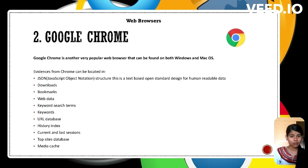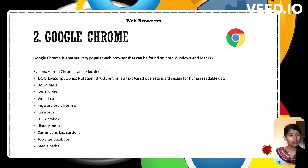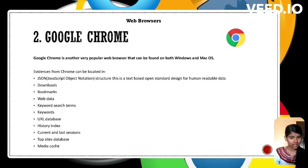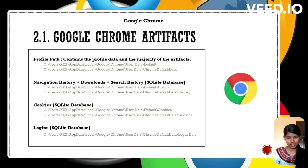Additional Chrome forensic artifacts include: history index — a quick reference for browsing history; session data — information on open tabs and windows; top sites database — frequently visited pages; and media cache — stored media content for quick access.